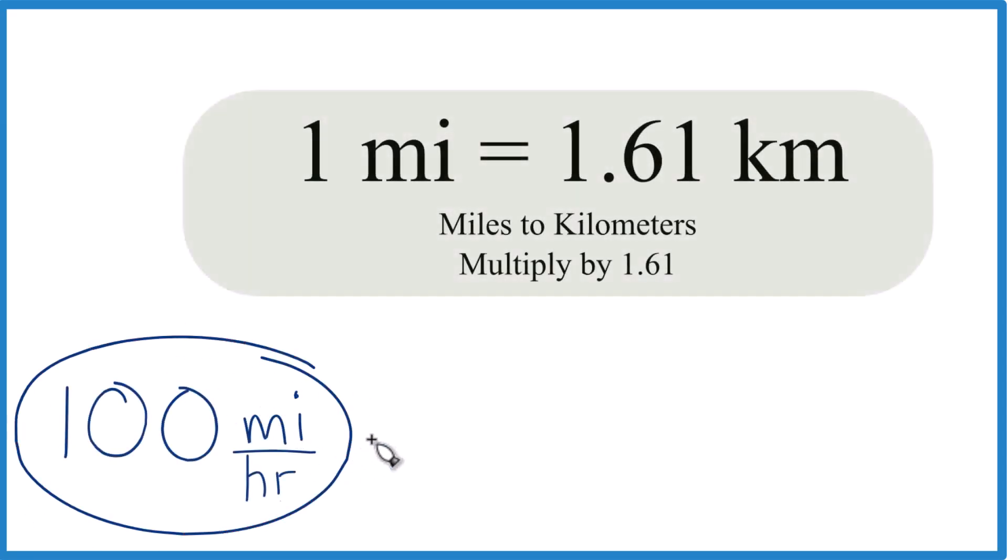If you have a hundred miles per hour, how many kilometers per hour is that? So if you have a hundred mph, how many kilometers per hour do we have? What you need to know: one mile equals 1.61 kilometers.